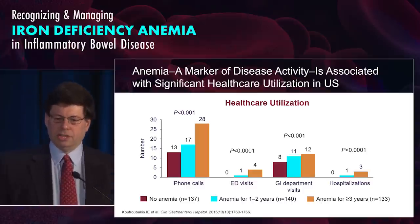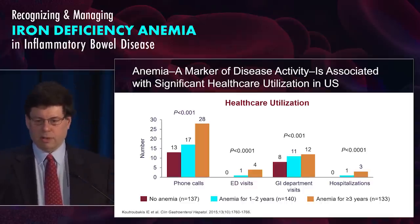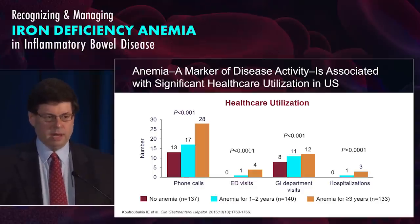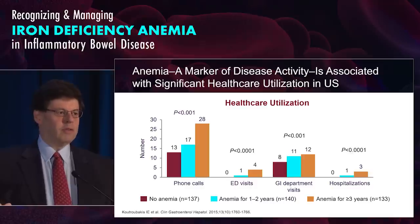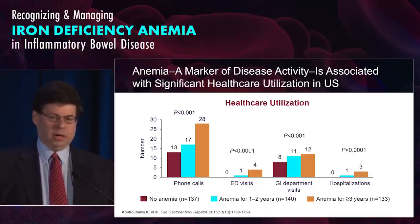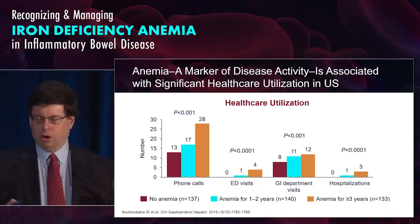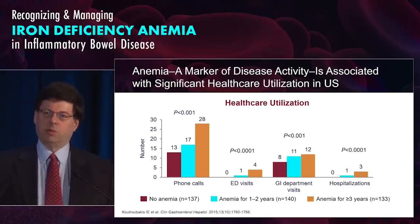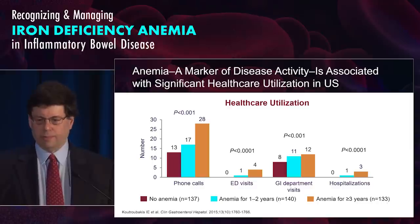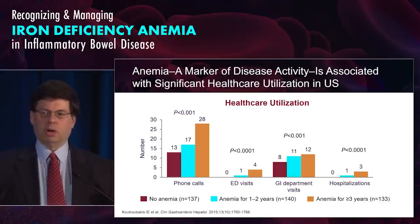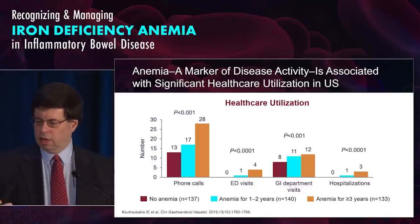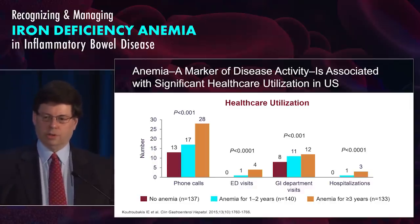Anemia is a marker of disease activity and is associated with significant healthcare utilization. Studies have looked at individuals that have anemia over a duration of time, and as a marker of quality, this can be evaluated. Over one to two years versus greater than three years, those with anemia over three years had more phone calls, emergency department visits, GI division visits, and hospitalizations — suggesting long-term anemia is associated with overall worse outcomes.